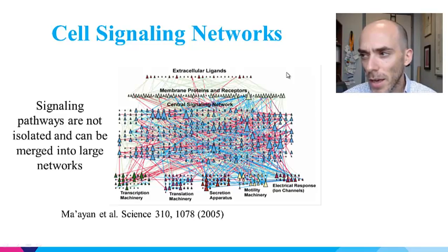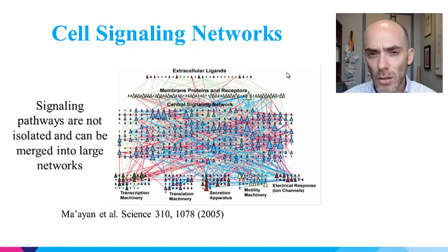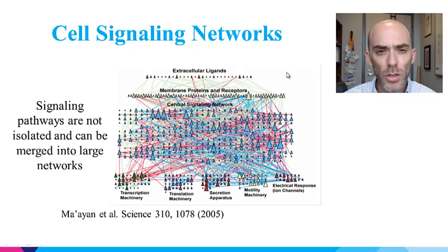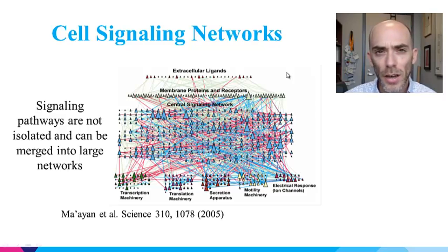This network connects ligand-receptor interactions to their downstream effectors, and those pathways terminate as components from different cellular machines such as transcription, translation, secretion, motility, and ion channel regulation. As you can see, the system is much more complex, and this is only representing maybe 5 to 10 percent of all the types of components and interactions happening in the cell signaling network that controls the cell.